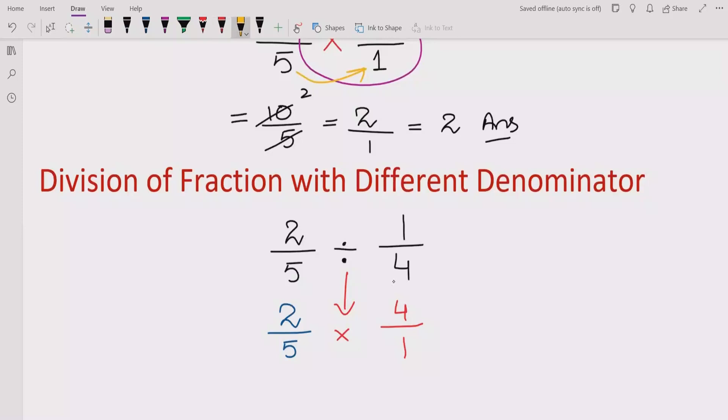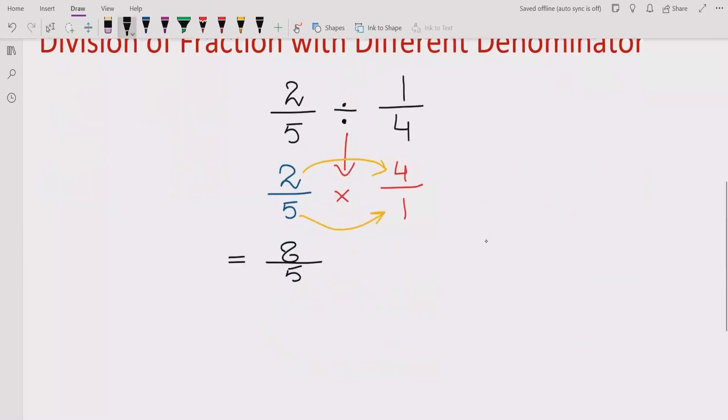And now again we have to multiply numerator with numerator and denominator with the denominator. So 2×4 is 8 and 5×1 is 5. So the answer of this question is 8 upon 5.